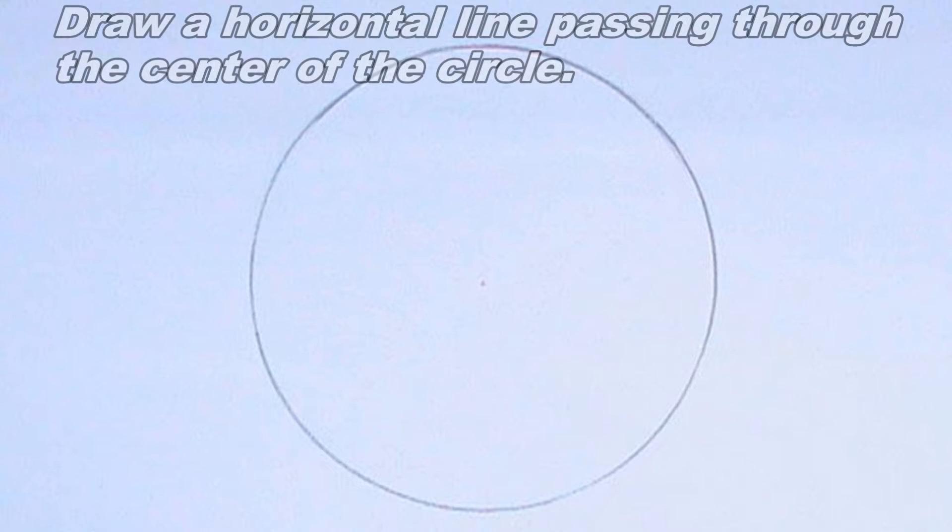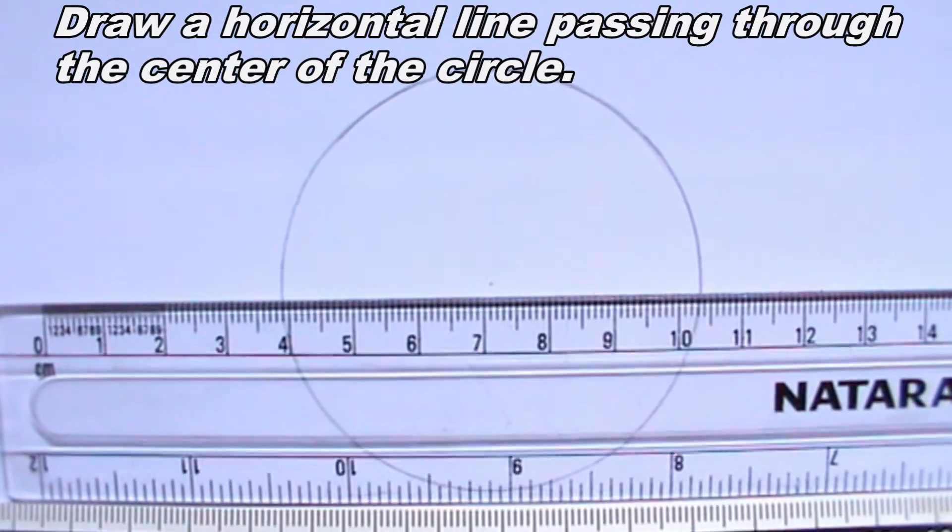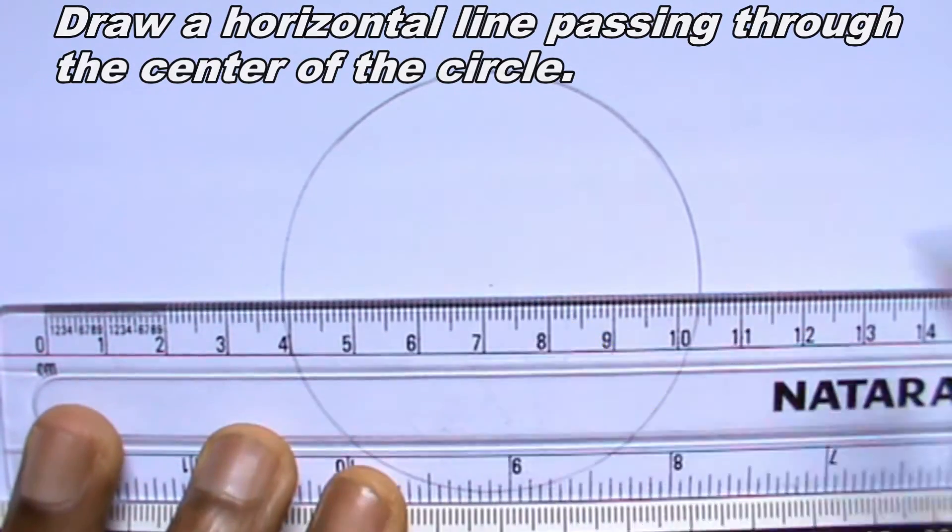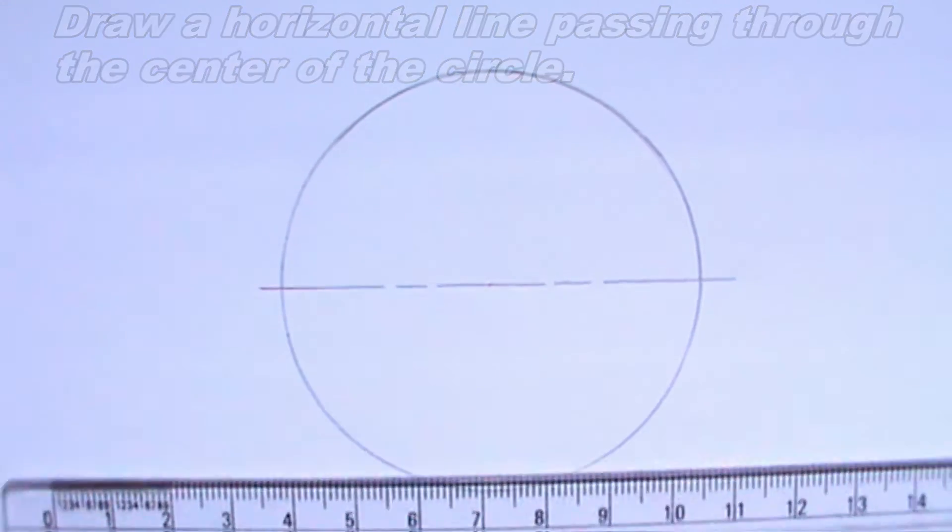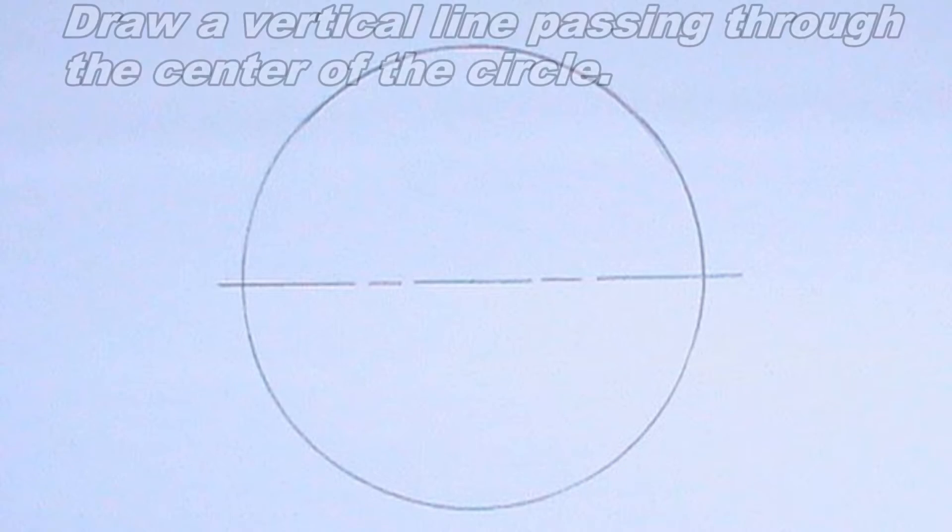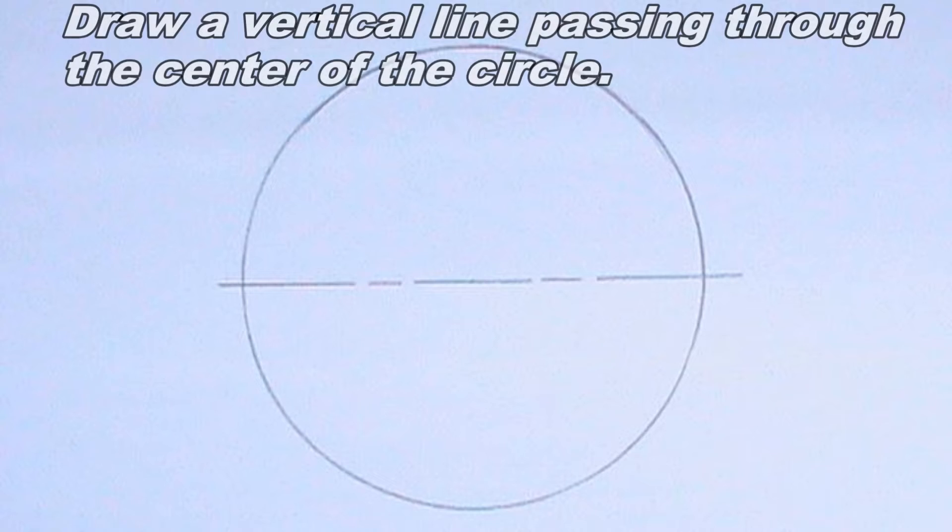Next, I will draw a horizontal line passing through the center of the circle. I will also draw a vertical line passing through the center of the circle.